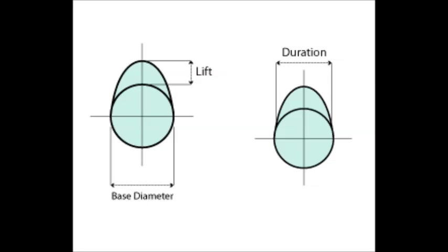Lift. The cam's basic function is to open the valves. Lift refers to how far the valve is opened or lifted off its seat. A street performance cam will usually have between 450 and 550 lift. More lift can increase power. An increased lift without changing duration increases power without affecting the point of peak power on the RPM band.